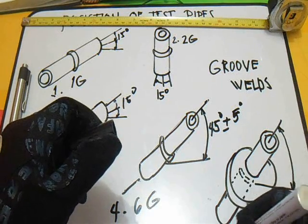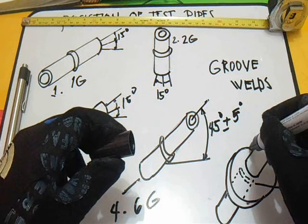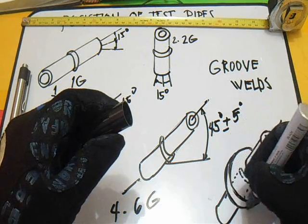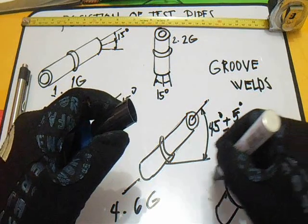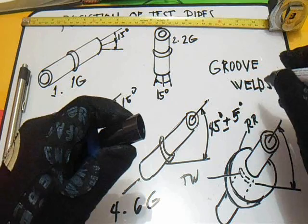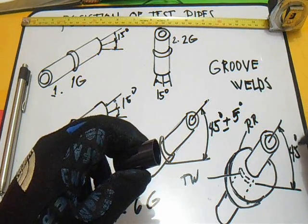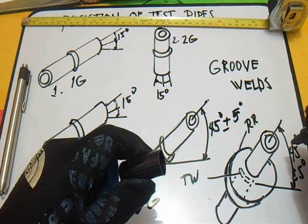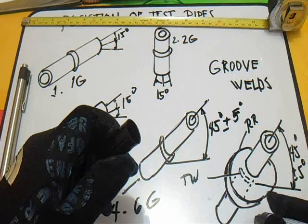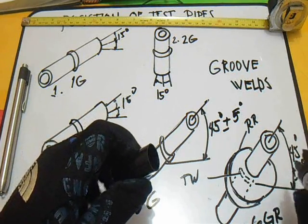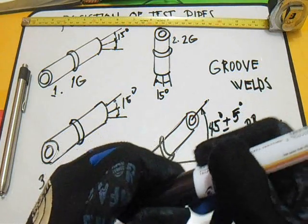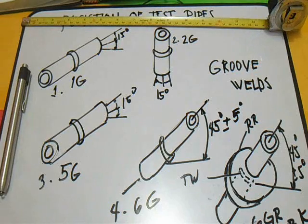Number 5: if you can see this one, this is the restriction ring. This is the restriction ring, the test weld, and another restriction ring. This position is also 45 degrees, positive or negative 5 degrees. This position is called 6GR — for T, Y, or K connections. This source is all in the AWS D1.1, position of test pipe welds.